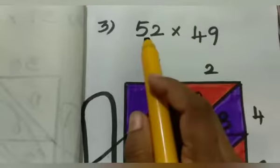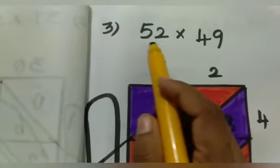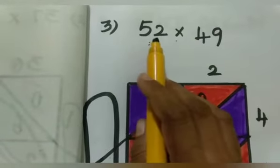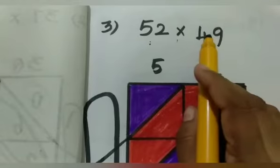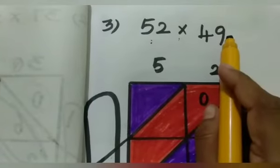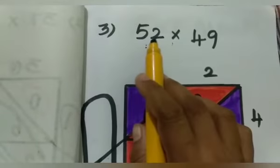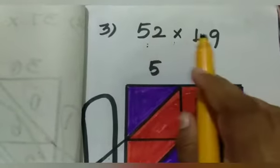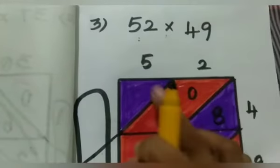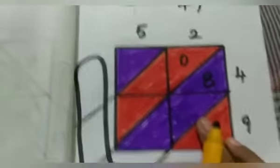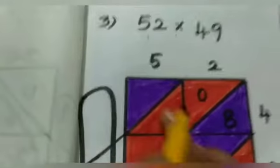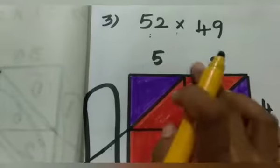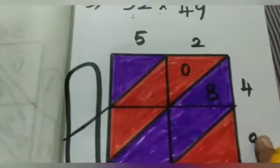Next, 3rd sum: 52 into 49. 52 is a 2-digit number and 49 is a 2-digit number. So, draw 2 columns and 2 rows. 52 is on top of the box and 49 is on the side.